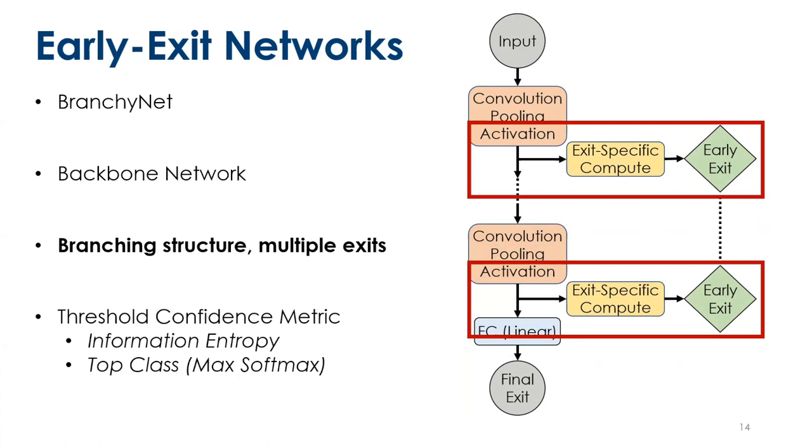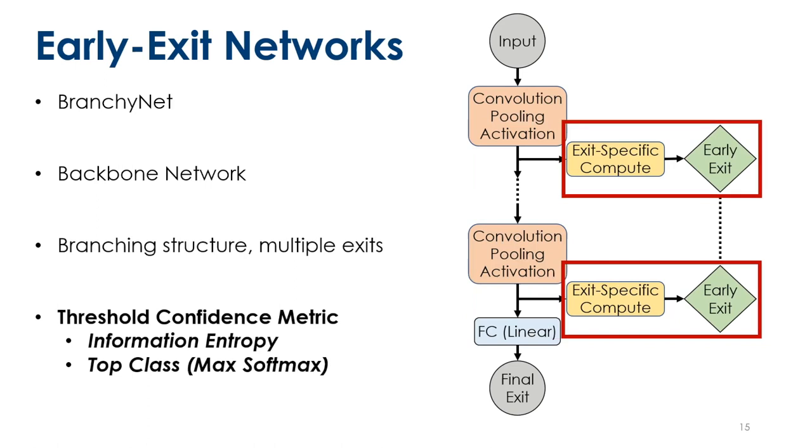In most cases, with all your favorite layers like convolution, pooling, activation, etc. At certain points on this backbone you have this forking or branching structure with additional feature extraction and classification at your early exit stage. Most importantly for the dynamic nature of these networks, you have this confidence metric. This is used to determine whether or not we exit at a particular stage. In the literature we've seen things like information entropy over the output of a softmax layer, as well as the maximum value of a softmax output being over a certain threshold.